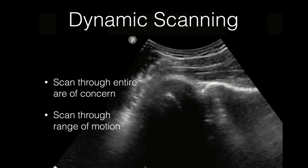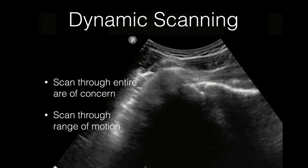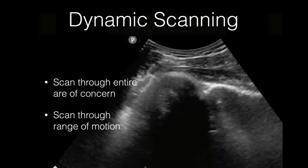The other benefit is dynamic scanning — scan through the area of concern and then scan through the whole range of motion. This is a shoulder being internally and externally rotated; you can see how that joint articulates and the musculature involved.